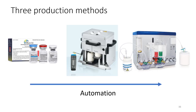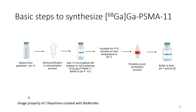Different production methods are available depending on your environment and facility. Kit vials are available on the market, as well as semi-automated and fully automated processes. For gallium-68 PSMA synthesis, the basic steps are: elute the generator, perform purification or concentration — anionic, cationic, or fractionation — add to the vial with your peptide, buffer to pH 4.5, incubate at room temperature for 10 minutes or at 95 degrees, apply post-purification if needed, and then buffer to final pH 7 for patient use before performing quality control.